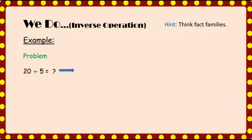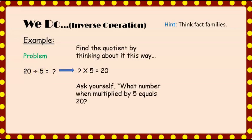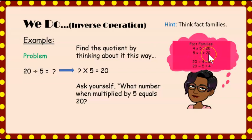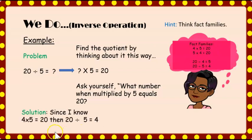Let's try another example: 20 divided by five. We want to think of it in terms of multiplication — use the inverse and ask ourselves: what number times five equals 20? Here are the fact families: four times five equals 20, and five times four equals 20. So we know that 20 divided by five must equal four. All of these numbers are related, creating our fact family.